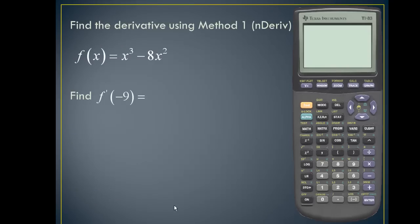Let's take a look at an example. Here we're asked to find the derivative using the nDeriv function for f(x) = x³ − 8x², and we're asked to find f′(−9).